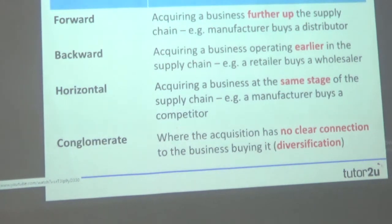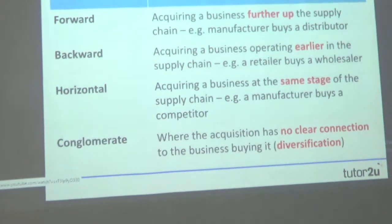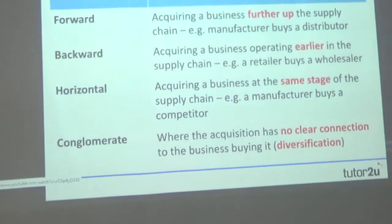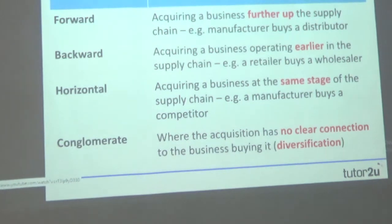There is a fourth direction we won't cover in this video — diversification — where the takeover or merger has no connection to the business and operates in an entirely different industry. It's called diversification or conglomerate integration. Hopefully that sets the scene in terms of these different types; let's look at a couple of examples to illustrate them.